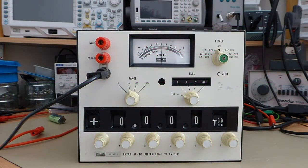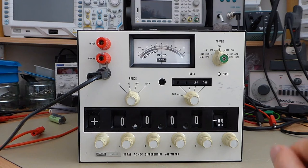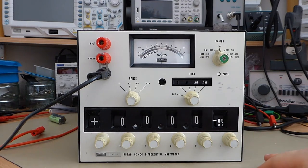Hello and welcome to another video featuring a piece of rather obscure test equipment. This time we have a Fluke 887AB differential voltmeter.